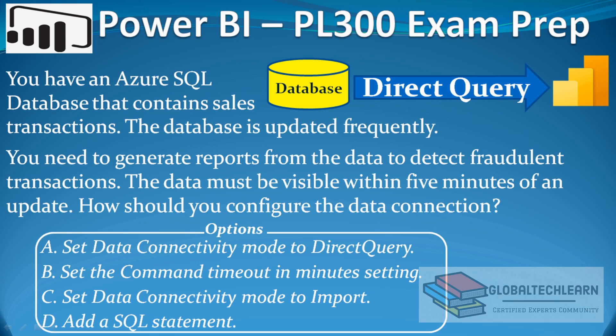We are left with two options: option A, set data connectivity mode to DirectQuery, and option C, set data connectivity mode to import. As per the requirement, we need the latest data within five minutes and the data size is not given. In import mode, Power BI deletes all the data in the dataset and pulls all data from the source, so this complete refresh process can take more than five minutes and we will not have the latest data.